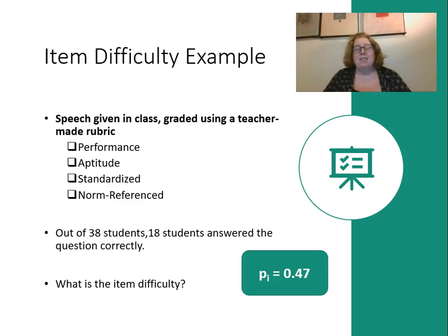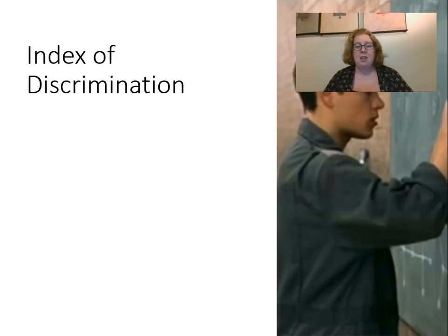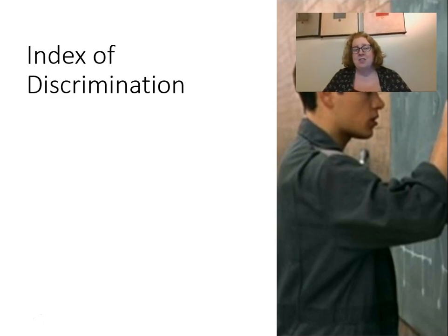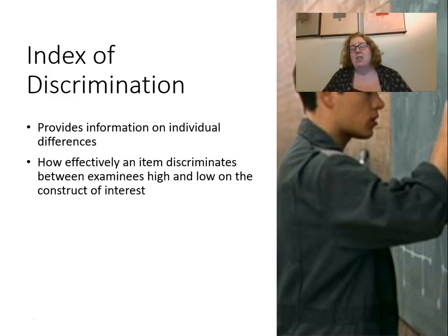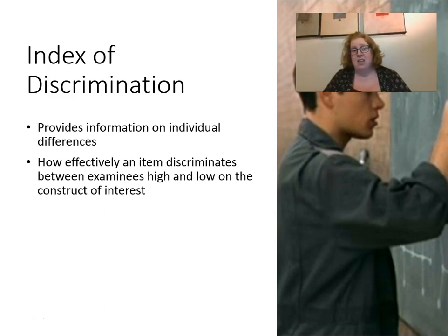Now we're going to talk about index of discrimination, and it's really important to distinguish between item difficulty and index of discrimination. Index of discrimination tells us how well an item functions — it provides information on individual differences and how effectively an item discriminates between examinees who are high and low on the construct of interest. Basically, does this item discriminate between students who knew the information and those who did not? It tells us how well the item functions, not just how easy or difficult it is.